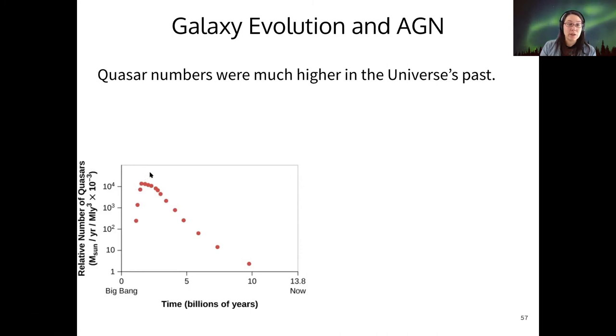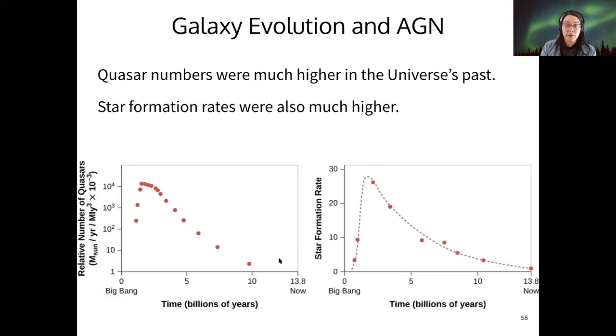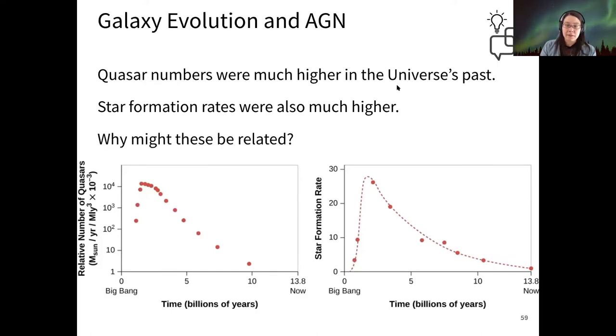Remember, we saw that quasars are easier to find in the universe's past. A few billion years after the Big Bang, that's when we saw the most quasars. And then the number of quasars declines to the present day. And similarly, the rate of star formation was also much higher in the universe's past than it is today. And both of these things together imply something important. So why do you think that star formation and quasar numbers would be related?